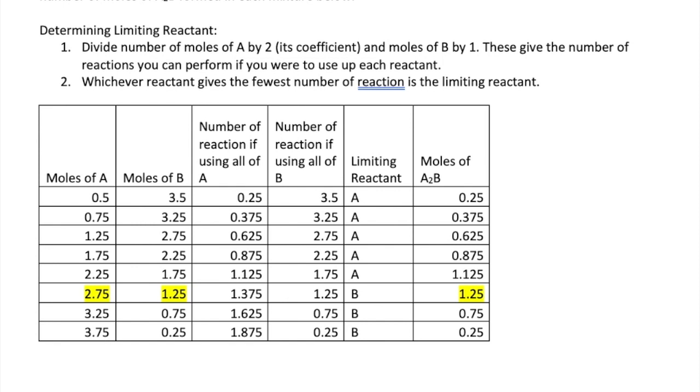Let me illustrate this for you. For the first mixture, we're using half a mole of A and three and a half moles of B. We divide 0.5 by 2, since that's the coefficient of A, and we divide B by 1, so we get these numbers right here. The reactant that gives us the smaller number is the limiting reactant, so in this case, A will be the limiting reactant. Once we figure out that A is the limiting reactant, we can use that information to calculate the number of moles of product that we're going to make. In this case, we get 0.25 moles A₂B.